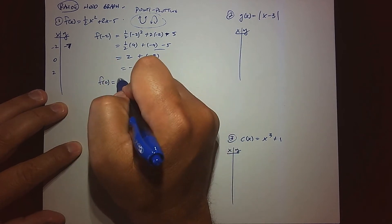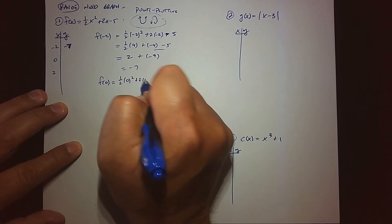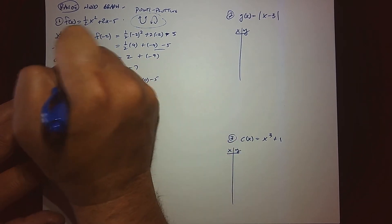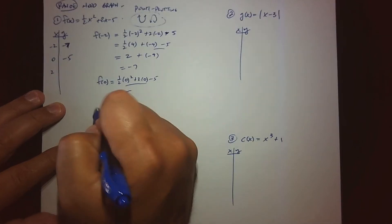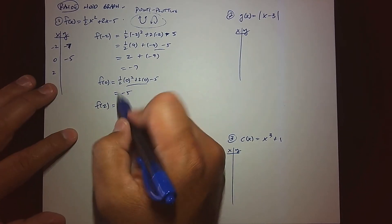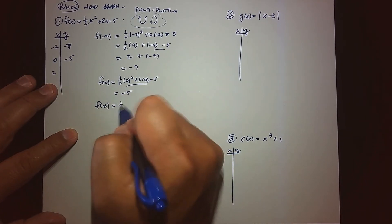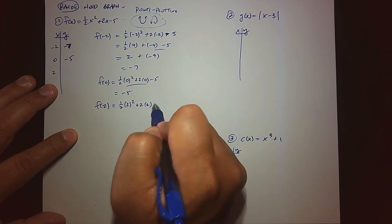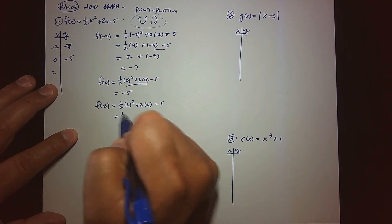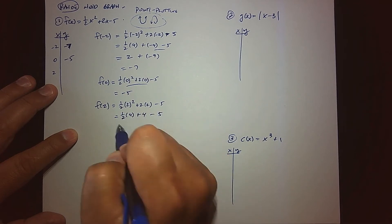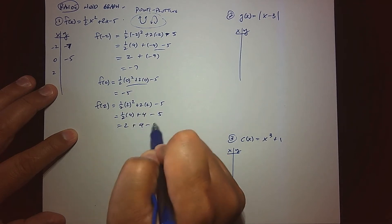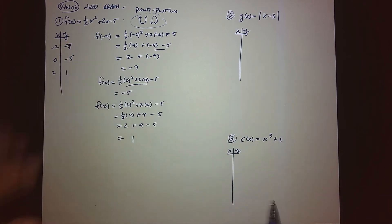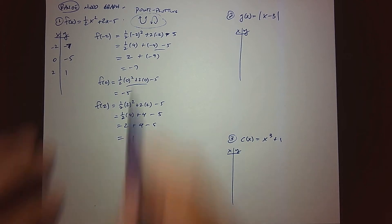For f of 0, when I plug 0 in, everything becomes zero and we end up with negative 5, so the point (0, negative 5) is on our graph. When we plug in 2, we get one half times 2 squared plus 2 times 2 minus 5. That's one half times 4, which is 2, plus 4, minus 5. So 2 plus 4 is 6, minus 5 gives us 1. We now have three data points.